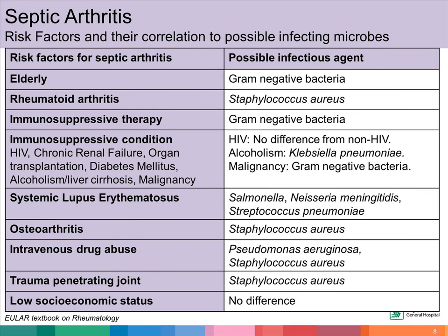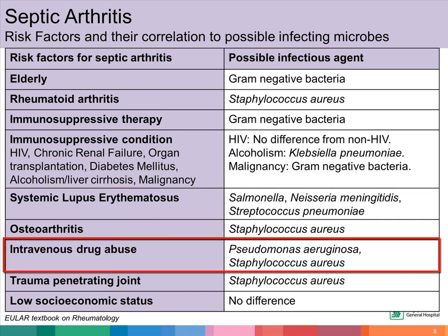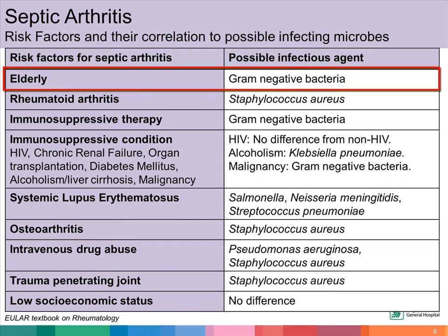Certain patient groups are at high risk of developing septic arthritis. The patient profile and the clinical setting also tell us about the likely infectious agent. Staphylococcus aureus is the most common organism causing septic arthritis. However, certain patient groups are more prone to get certain bacteria. For example, those with SLE are more prone to get Salmonella, Neisseria meningitidis, and Streptococcus pneumoniae. Those with intravenous drug abuse are more likely to get Pseudomonas aeruginosa and Staphylococcus aureus. Elderly patients are also more prone to get gram-negative bacteria causing septic arthritis.